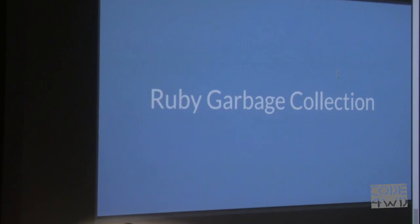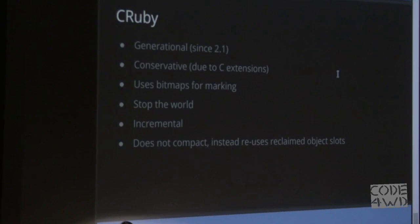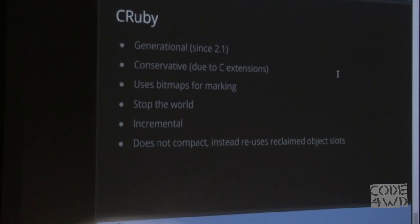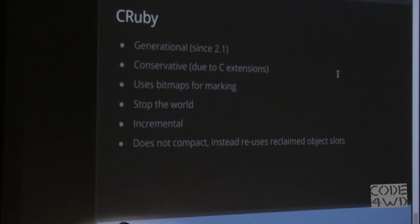Finally, a quick look at what Ruby does. It's generational since Ruby 2.1. It's conservative — you can store pointers in C code, so by default it cannot find those, and you have to provide hook functions that run whenever garbage collection occurs. It uses bitmaps for marking, introduced around Ruby 2.1 or 2.2. It stops the world, pausing all threads when it runs. It's incremental, with the goal that those pause timings take less time. And it does not compact explicitly; instead it tries to reuse memory whenever it allocates objects.